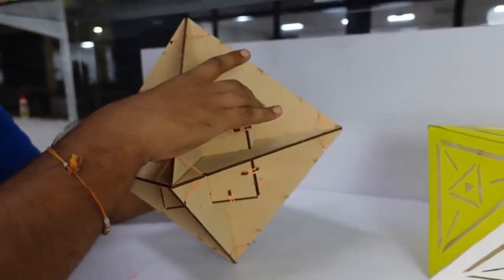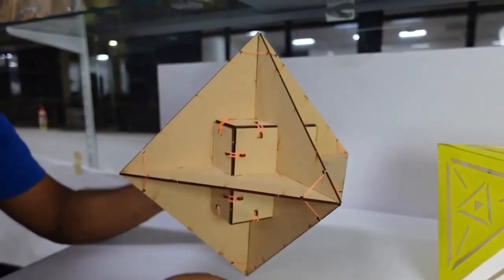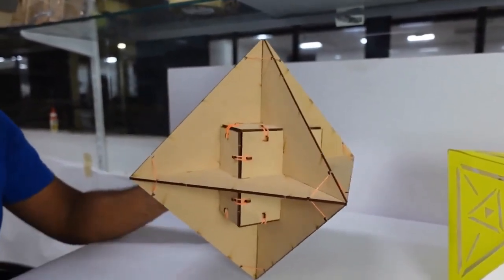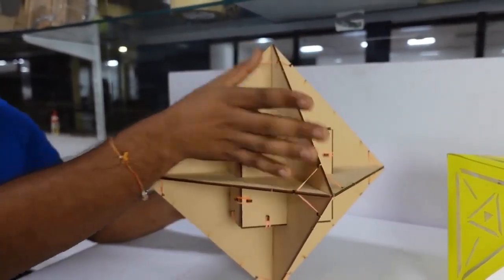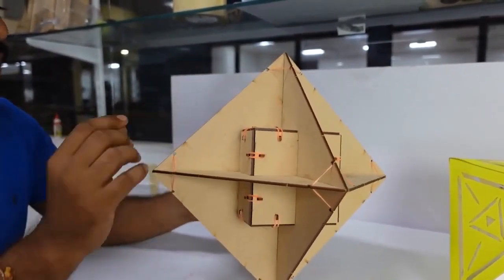You can observe here that when we have joined the midpoints of equilateral triangles, the shape obtained is a cube. Similarly, if we divide the lengths of the side of octahedron into golden ratio, then we'll get a very interesting shape called icosahedron. You can see in this structure.